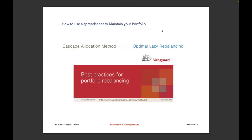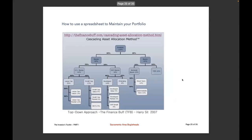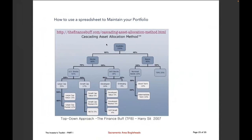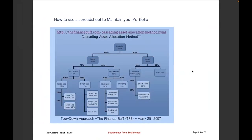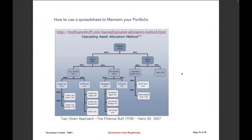Next is the CAM spreadsheet, which includes three different approaches to rebalancing: Vanguard's best practices, the Cascade Allocation Method, and then Optimal Lazy Rebalancing — optimal but not trivial, hence the online spreadsheet to help you through it. The first method was either created or adapted by Harry Sit, The Finance Buff, around 2007. This is a way to determine your asset allocation using a top-down or cascading method, starting with 100% of the portfolio.